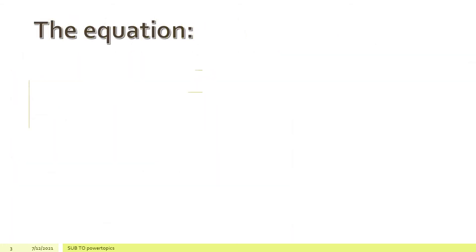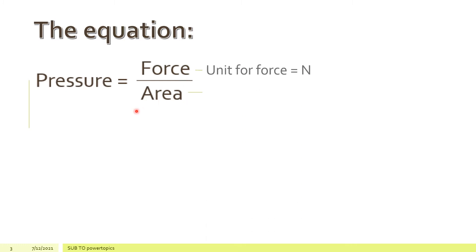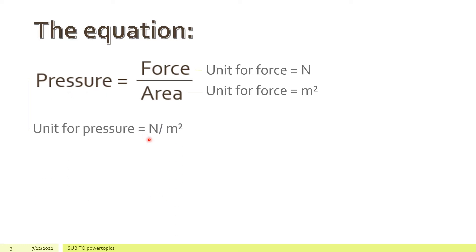This is the equation involving pressure, force and area. To calculate the pressure, you divide force by area. Force is measured in newtons and area is measured in meters squared, so the unit for pressure is Newton per meters squared.